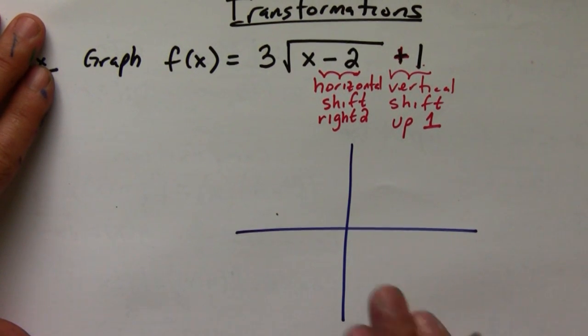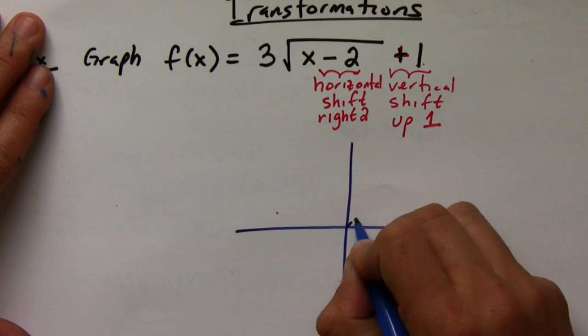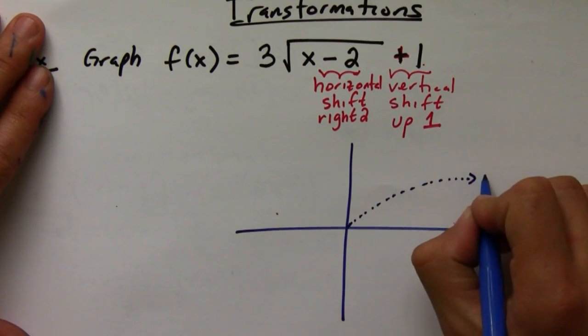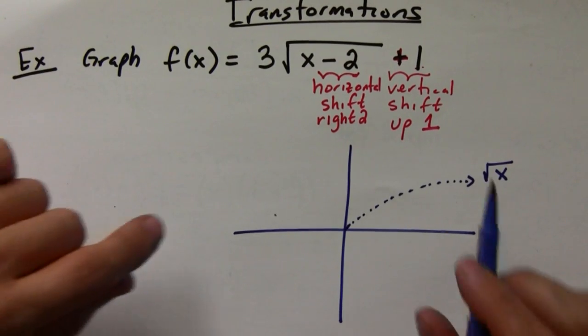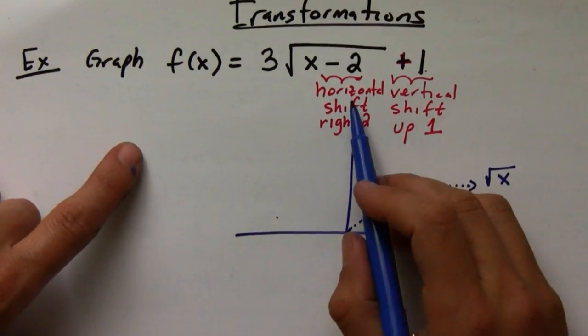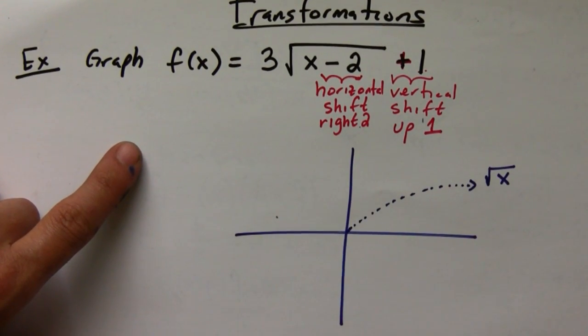I'm going to draw here with a dotted line just your basic square root of x function so that we can compare it to the function that we end up with. So we have horizontal shift right by two and then vertical shift up by one.